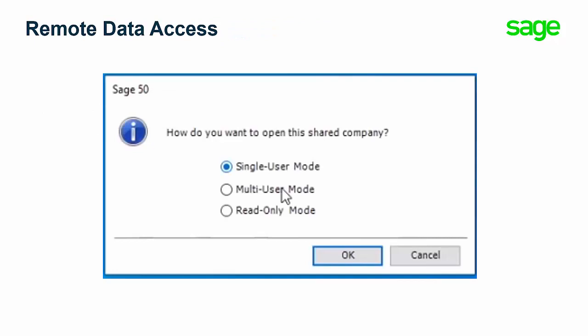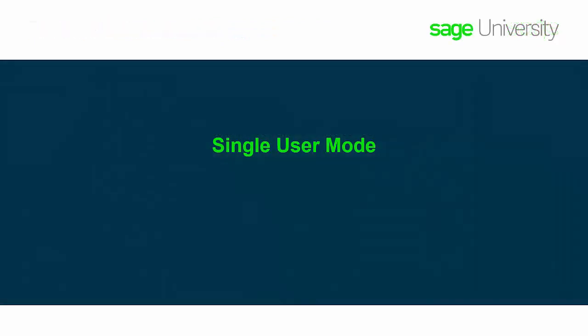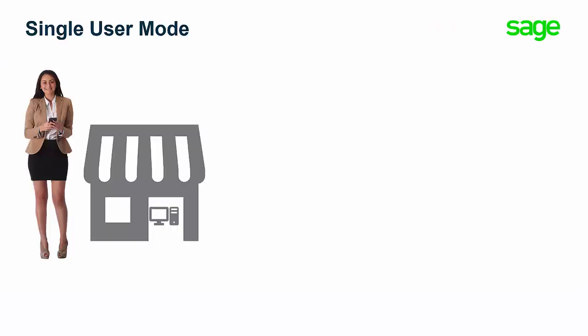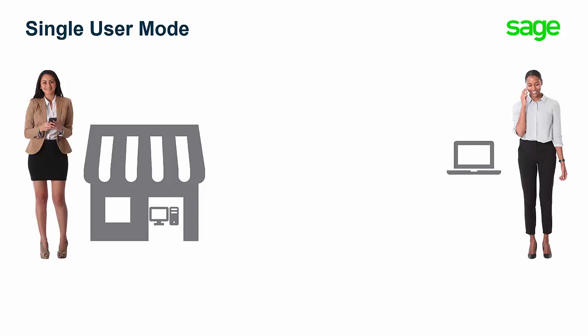Let's look at the three modes. First, in single-user mode, one user can access the company data remotely. For instance, a business owner would like her bookkeeper to complete a payroll run. She invites her bookkeeper to collaborate while she attends a meeting. While the business owner is attending her meeting, the bookkeeper can access the company data file in single-user mode. The bookkeeper does not need to travel to the business owner's location.